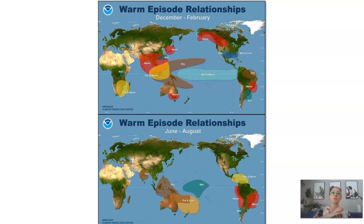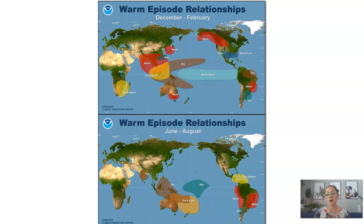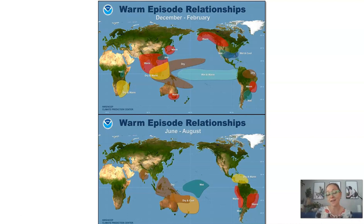During an El Niño year, the Pacific Coast gets a lot of rain while Indonesia dries out. Changing where that rain falls is going to have an impact on ecosystems and habitats. During the 1997 El Niño event, Indonesia dried out because rain was falling along the west coast of North and South America — causing drying conditions, a lot of forest fires, and many human deaths.